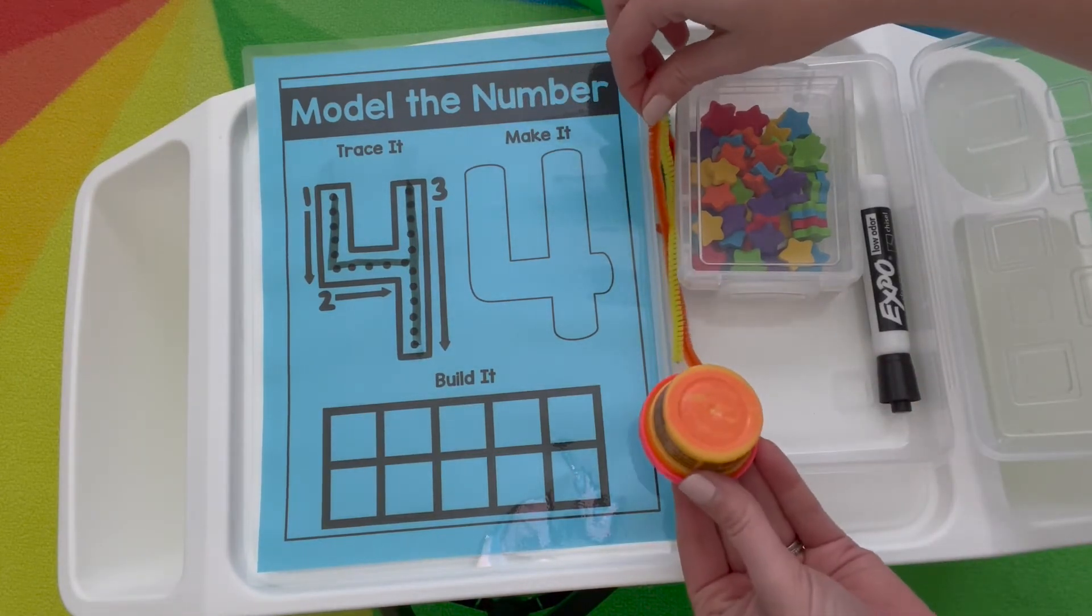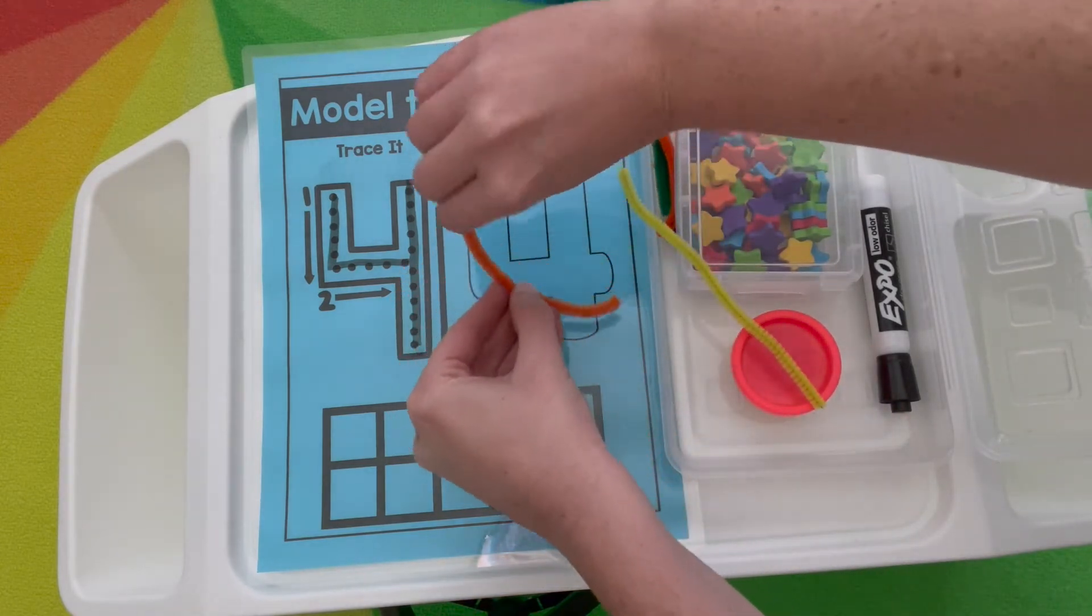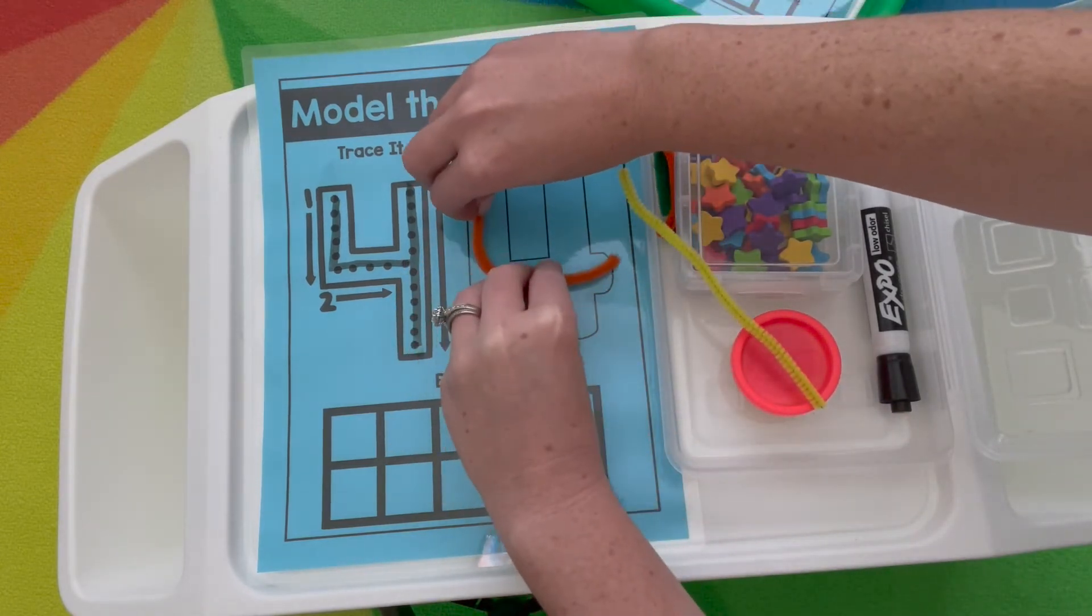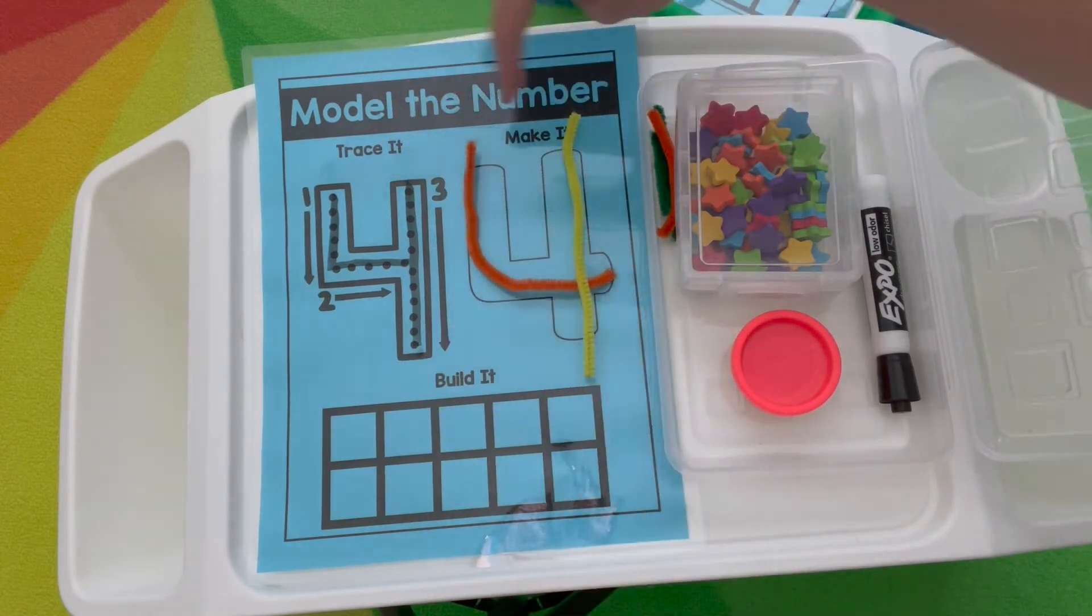For make it, they can use the pipe cleaners or the play-doh to make the number. Just for the video to go faster, I'll go ahead and use the pipe cleaner. So we want to have that down and across, down to the floor. Trace it, make it.